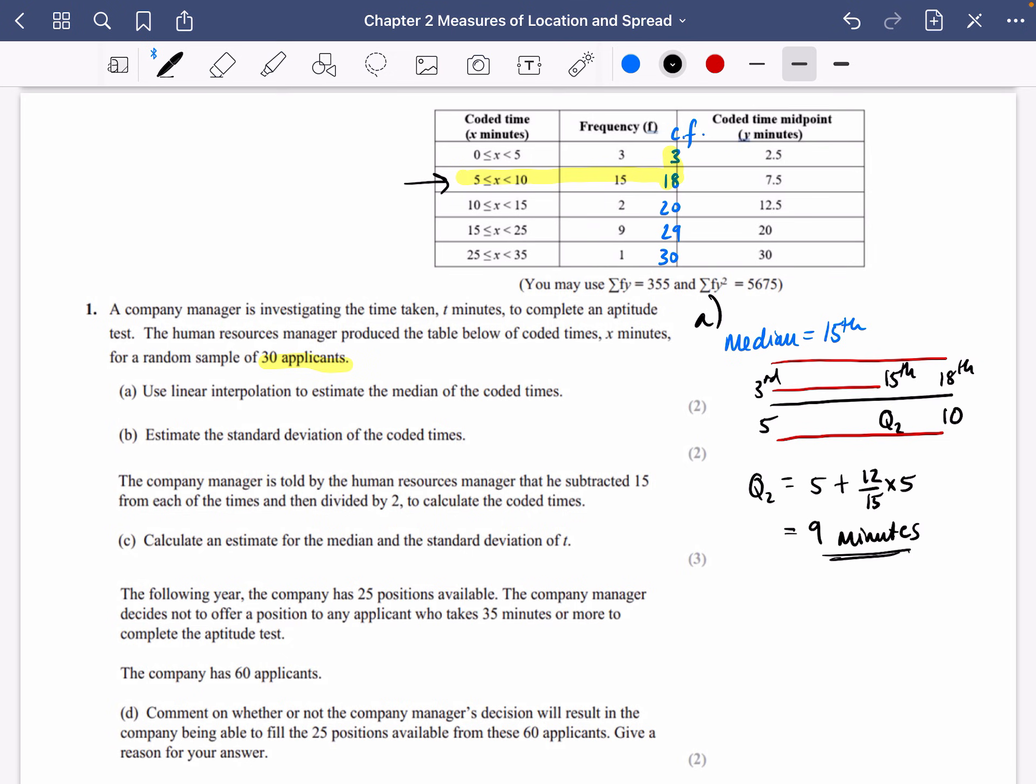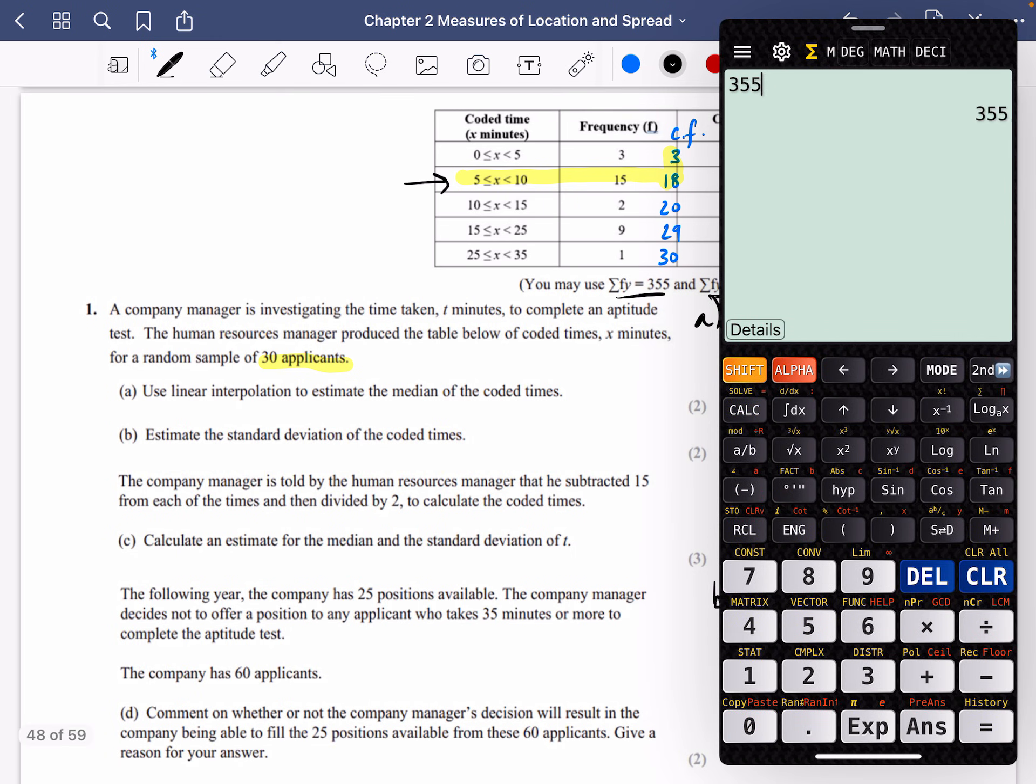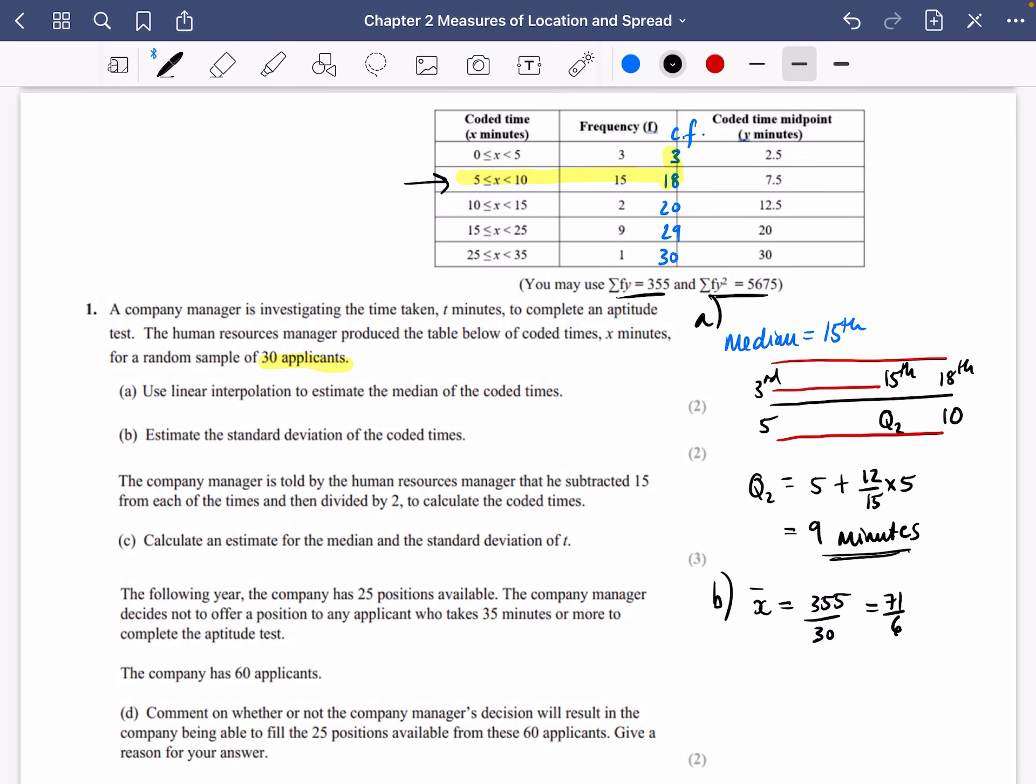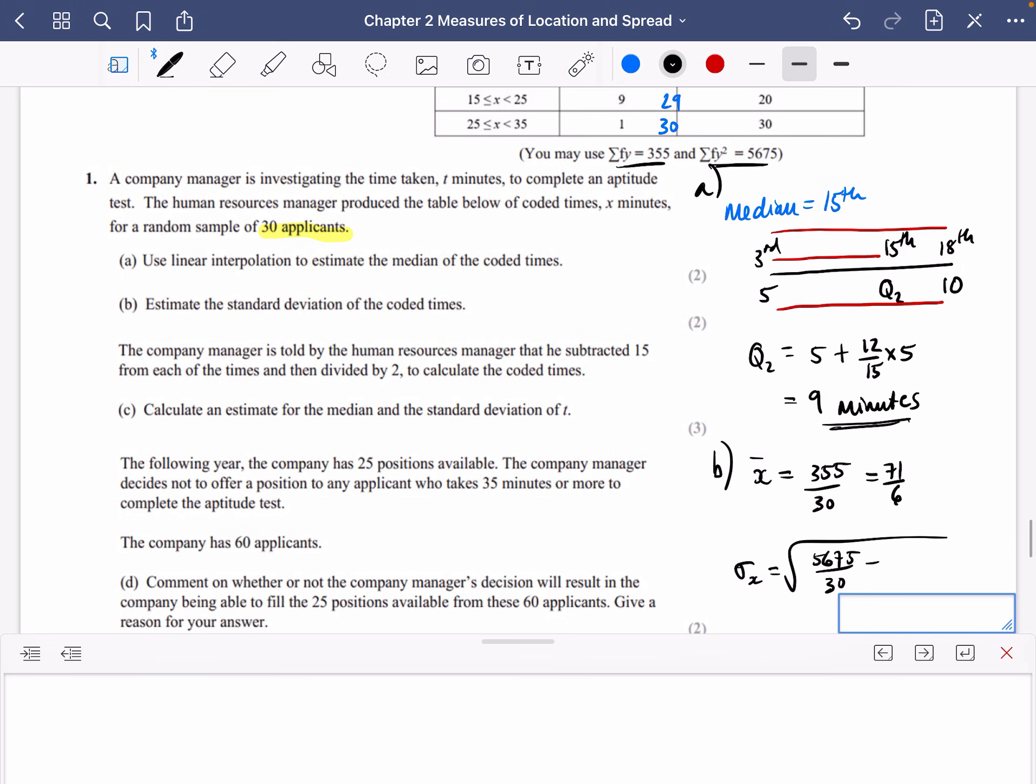Part B, it says estimate the standard deviation of the coded times. So it's an estimate because we've got some summaries with the midpoints and things. But to find the standard deviation, I'm going to use this data that I've got here. I'm not going to bother putting any of it in the calculator. First of all, I'm going to find out what X bar is going to be equal to. I'm going to do the sum of Fy divided by the sum of how many there are. So it's going to be 355 divided by 30, which is 71 over 6. So we know that the standard deviation of these X values is going to be the mean of the squares. So that's your 5675 over 30 minus the square of the mean. So that's 71 over 6, all squared.